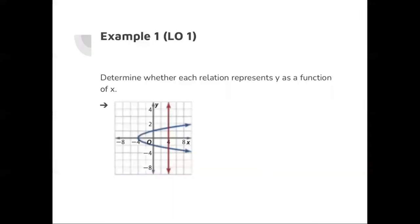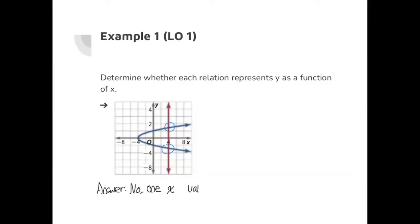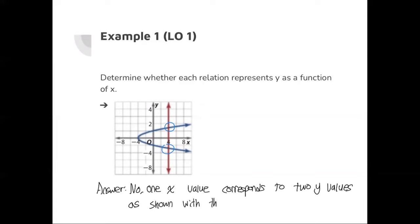Example one, part two: determine whether each relation represents y as a function of x. This literally gives us the vertical line test — a random vertical line has been drawn and we can see there are two intersecting points, so immediately we can tell it's not a function. We write: one x value corresponds to two y values as shown with the vertical line test.